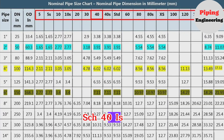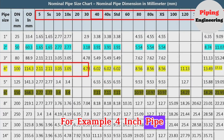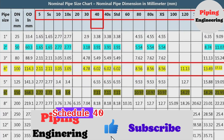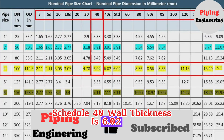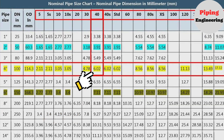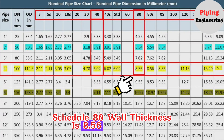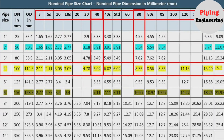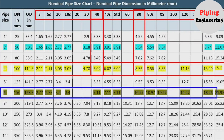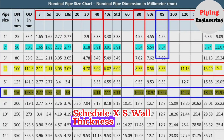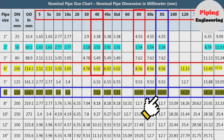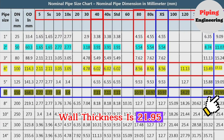SCH 40 is the most popular pipe schedule. For example, a 4-inch pipe Schedule 40 has a wall thickness of 6.02 mm. A 4-inch pipe Schedule 80 has a wall thickness of 8.56 mm. A 6-inch pipe Schedule XS has a wall thickness of 10.97 mm. A 6-inch pipe Schedule XXS has a wall thickness of 21.95 mm.